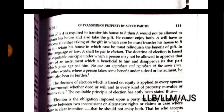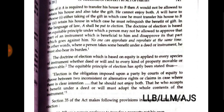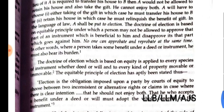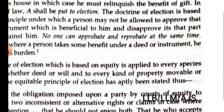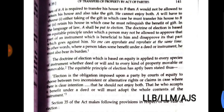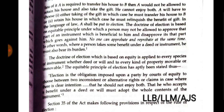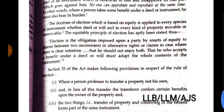The Doctrine of Election is based on an equitable principle under which a person may not be allowed to approve that part of an instrument which is beneficial to him and disapprove that part which goes against him — otherwise it would be a miscarriage of justice. No one can approbate and reprobate at the same time. In other words, where a person takes some benefit under a deed or instrument, he must also bear its burden.